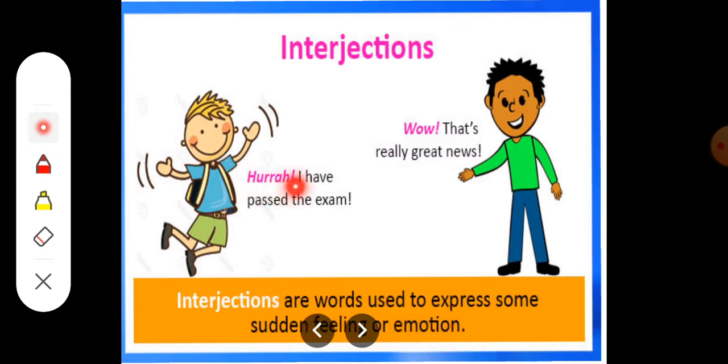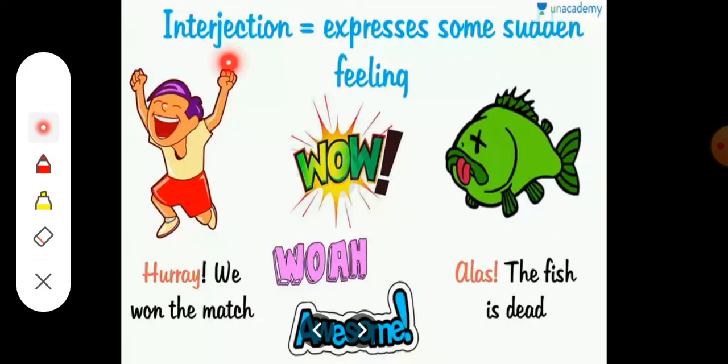These words are called intersections. Intersections express some sudden feelings like wow, hooray, alas, awesome. These words are called intersections, and these words are always with exclamation mark.